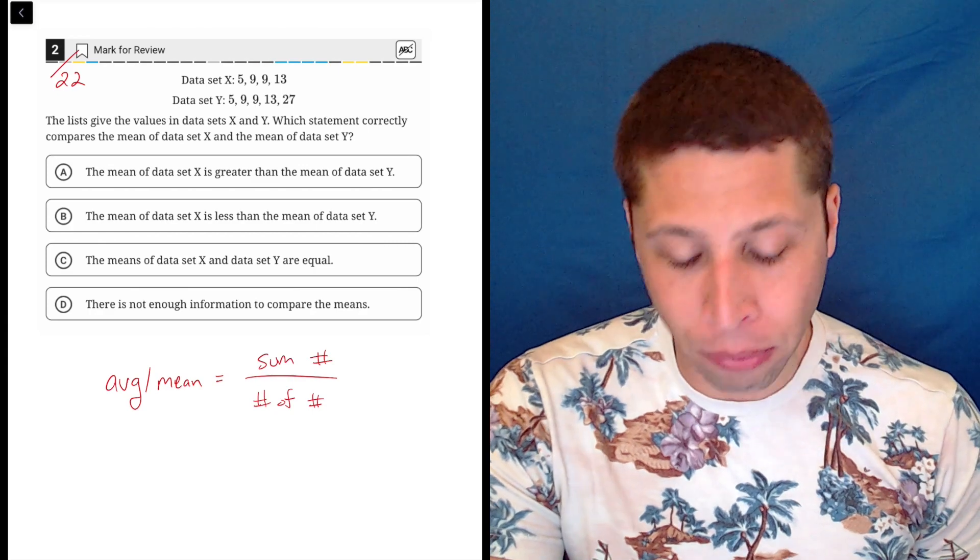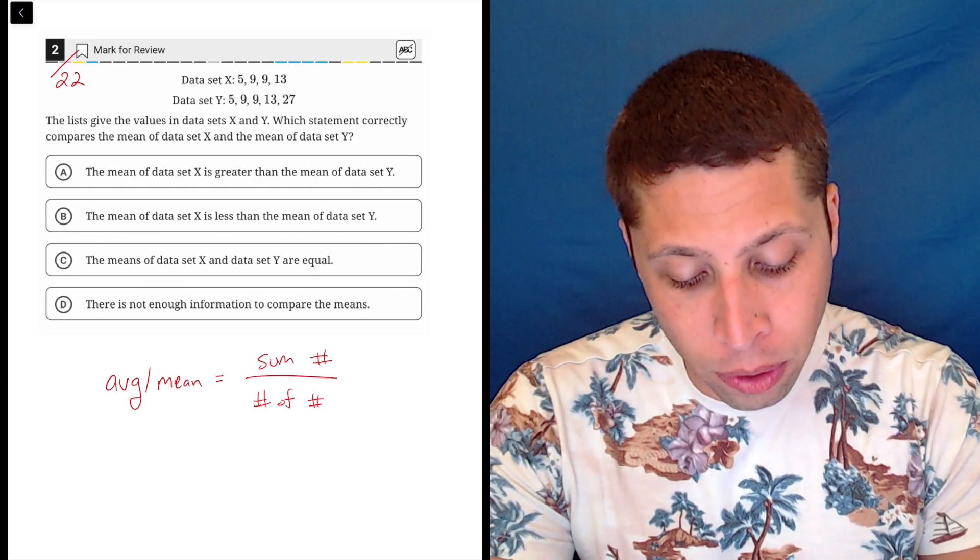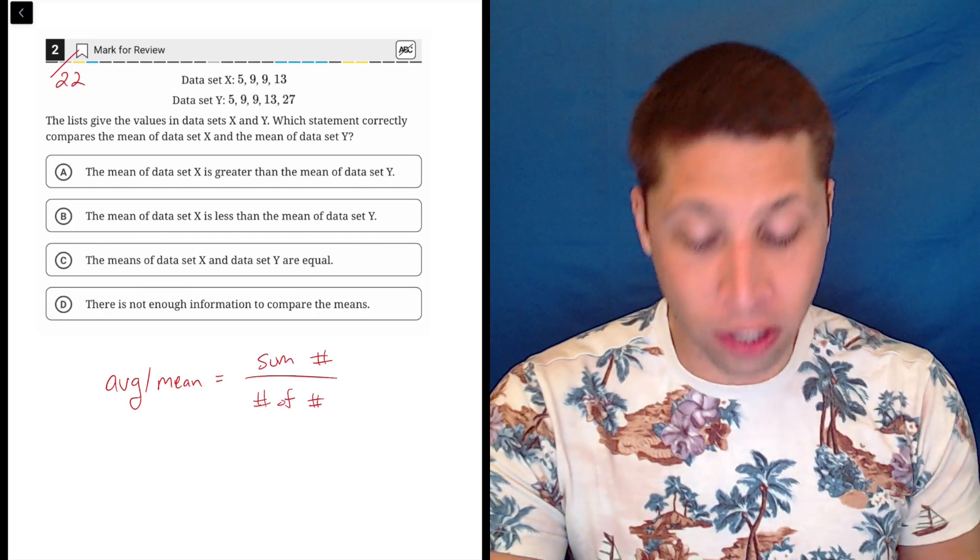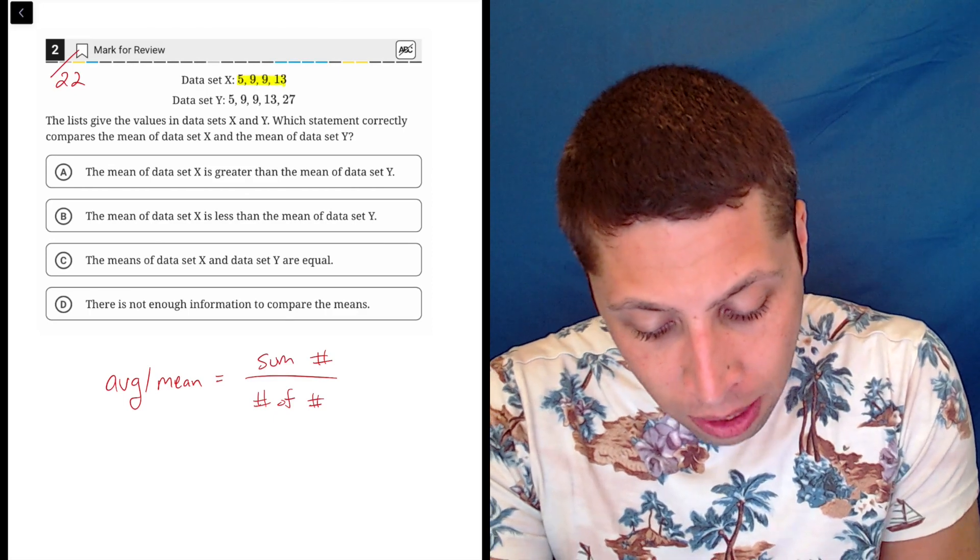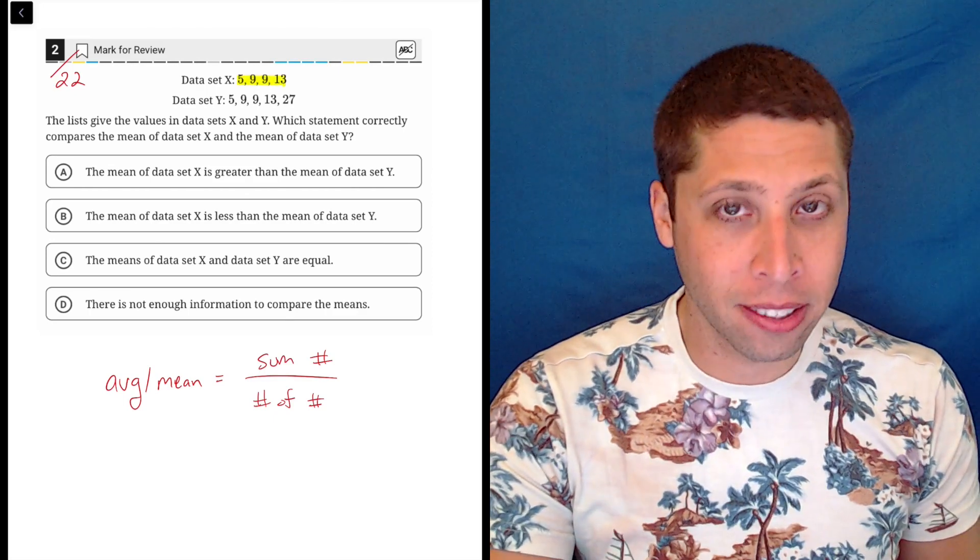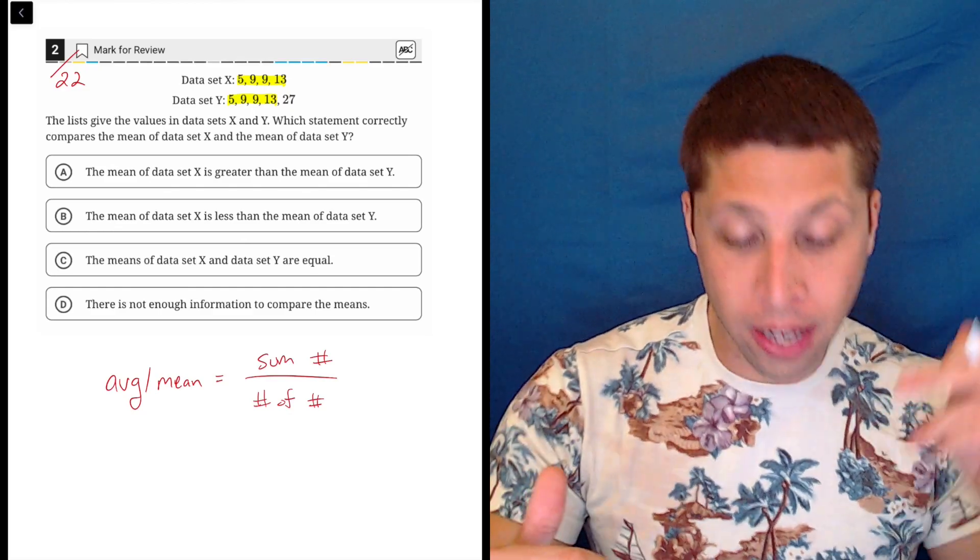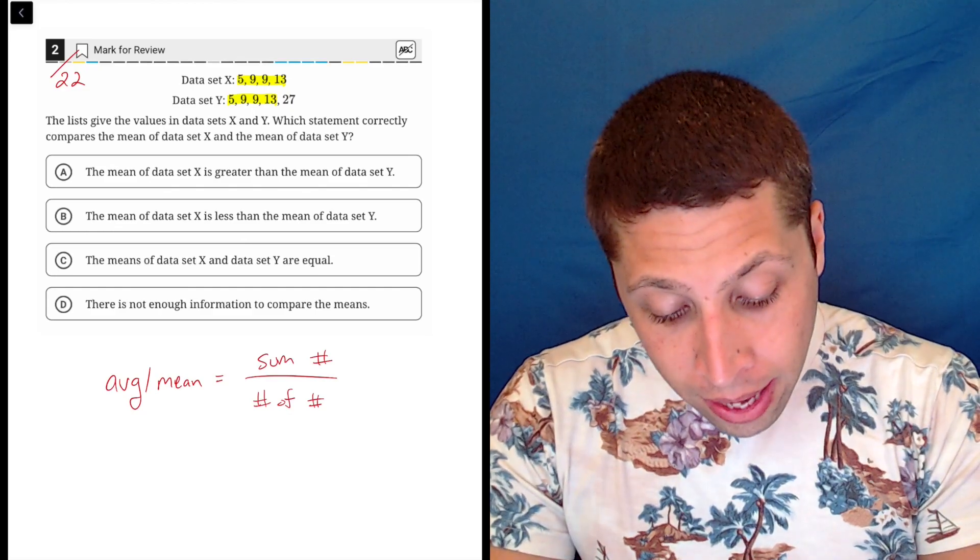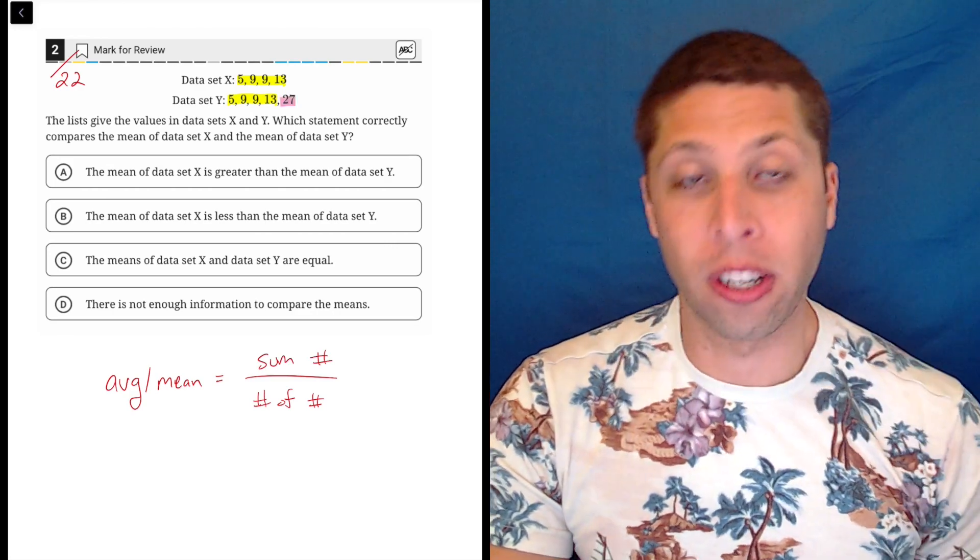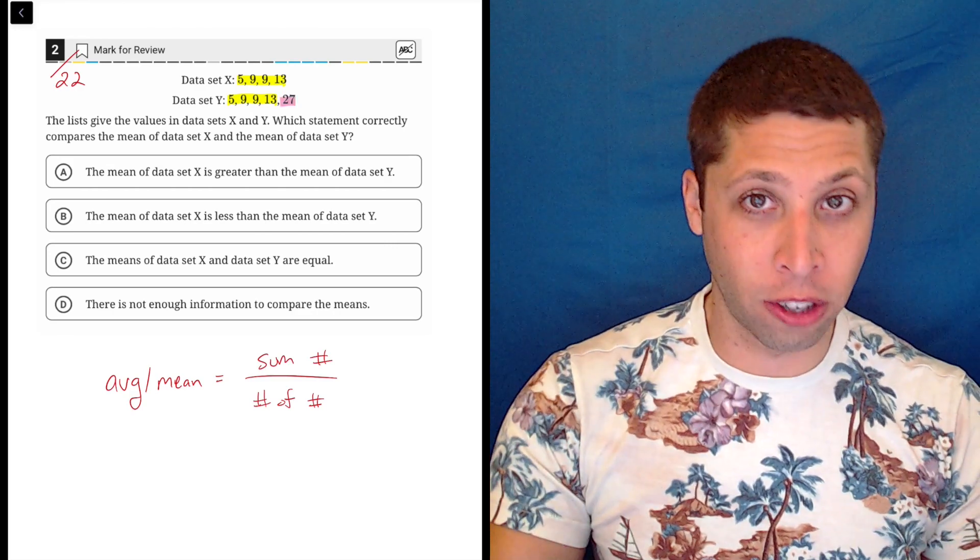You could calculate the means, but really you shouldn't need to. What we should notice is most of each set is the same. So all of the numbers from data set X are also in data set Y. It's a one-to-one, 5, 9, 9, 13.